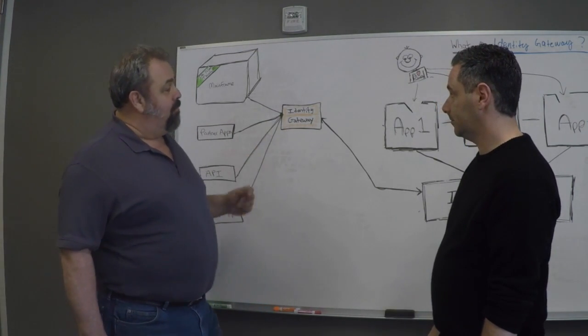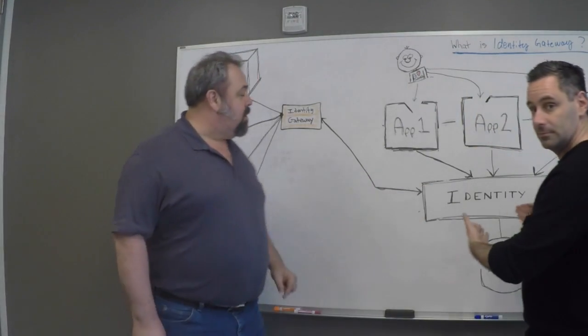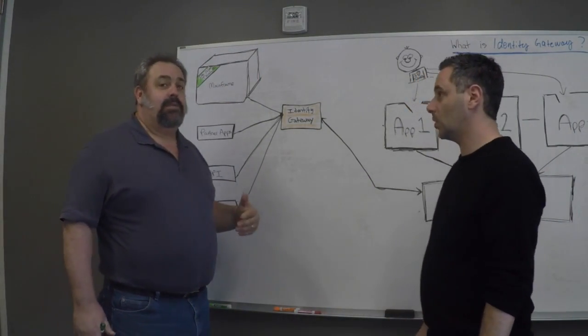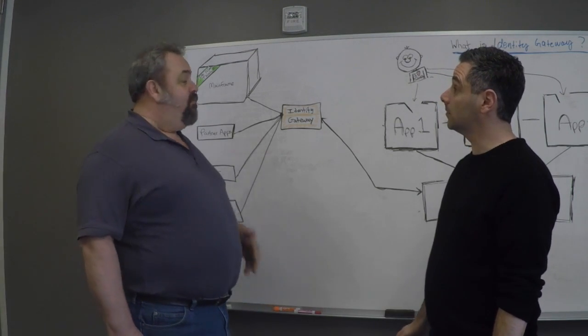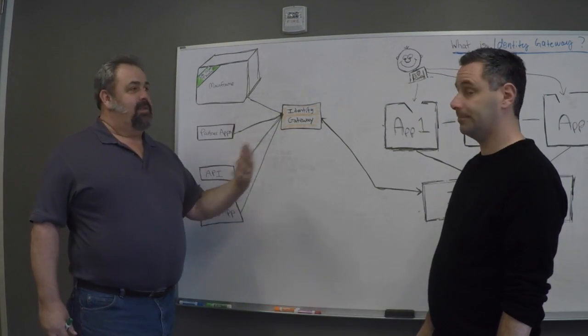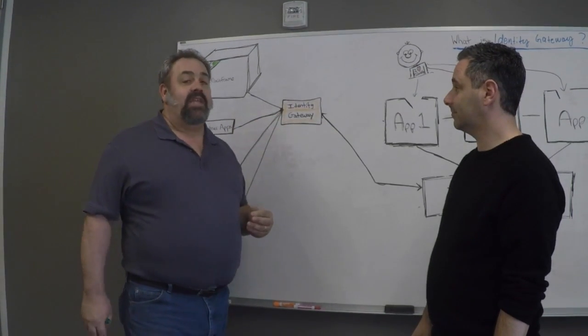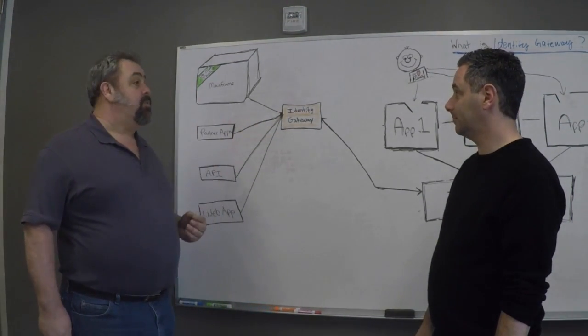It's the intelligence that we put between the identity system and these applications or things that don't play well. Resources. It's the translation. It's the part where we put all of the intelligence to be able to work with these resources.